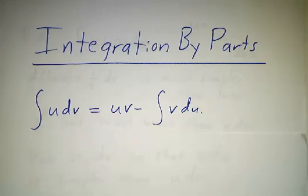Okay, we've seen that the basic formula for integration by parts is that the integral of u dv is u times v minus the integral of v du.